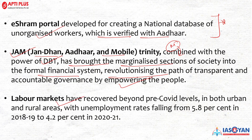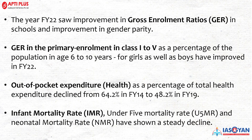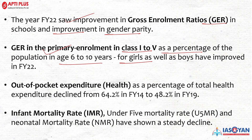The labor market has recovered beyond pre-COVID levels both in urban and rural areas, with the unemployment rate falling from 5.8% to 4.2% between 2020 and 2021. Financial year 2022 saw improvement in the Gross Enrollment Ratio (GER) in schools and improvement in gender parity. Primary enrollment for classes 1 to 5 as a percentage of the 6-to-10-year population has improved for both girls and boys — a positive sign for equal access to education.